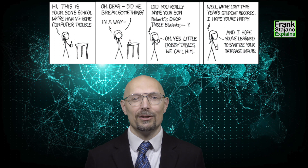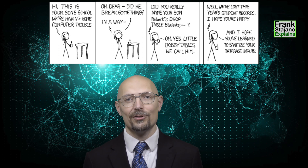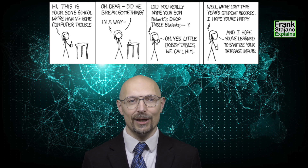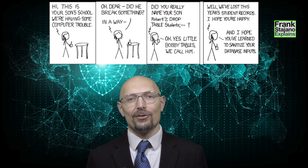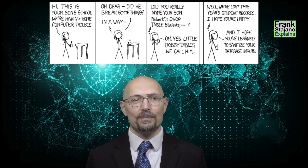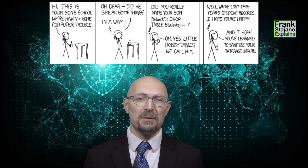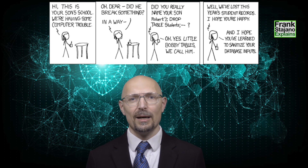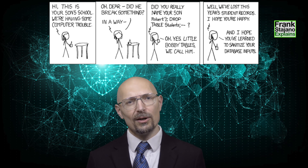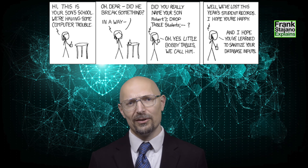So let me now introduce you to the lovely mum of little Bobby Tables, for the few of you who haven't already come across her. Let's just read this classic comic strip together. 'Hi, this is your son's school, we are having some computer trouble.' 'Oh dear, did he break something?' 'In a way, did you really name your son Robert, apostrophe, close bracket, semicolon, drop table students, semicolon, hyphen, hyphen, space?'